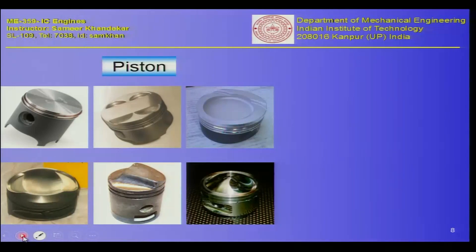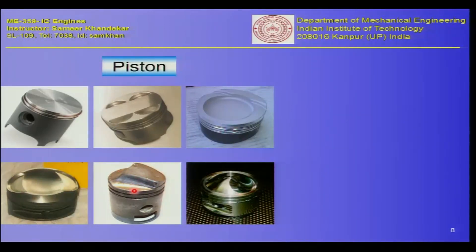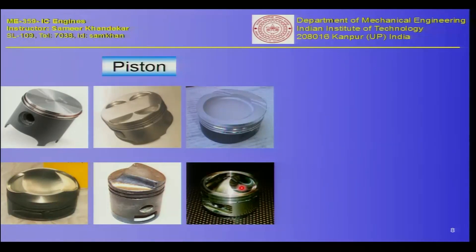Let us look at some types of pistons visible on the screen. There are different types of pistons — in the two-stroke engine the piston had a different shape. You can see flat piston heads, piston heads with depressions, heads with projections, and special designs with a combustion chamber machined into the piston itself. You can also see piston rings on these pistons.